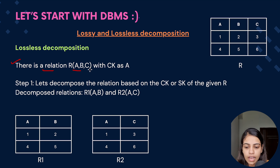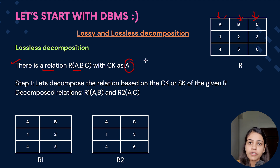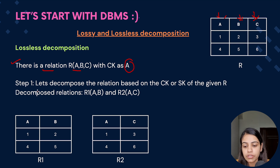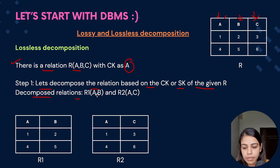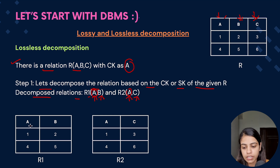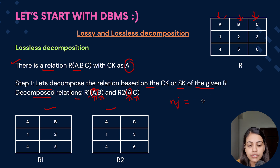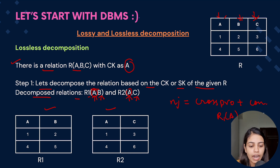Let's understand lossless decomposition with an example. Consider a relation R having attributes A, B, and C, where the candidate key is A. In lossless decomposition, we divide the table on the basis of the candidate key. So we decompose into R1 having A and B, and R2 having A and C, since A is the candidate key or super key and becomes the common attribute. Now let's perform a natural join between R1 and R2, where we do the cross product and then apply the condition that R1.A should equal R2.A.